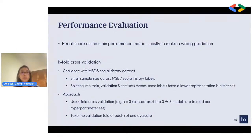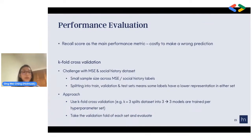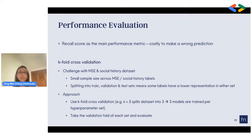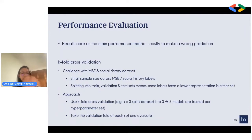To evaluate model performance, we used the recall score as the main performance metric, because it's costly to make a wrong diagnosis. We also applied a careful cross-validation technique because for MSE and social history data we have very small sample sizes across some labels. Splitting into three datasets — train, validation, test — would mean some sets have very low samples. So we did careful cross-validation, splitting into three sets and training three models on each set, then taking the validation fold of each set to evaluate model performance.